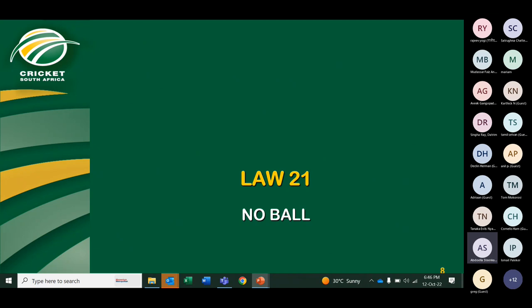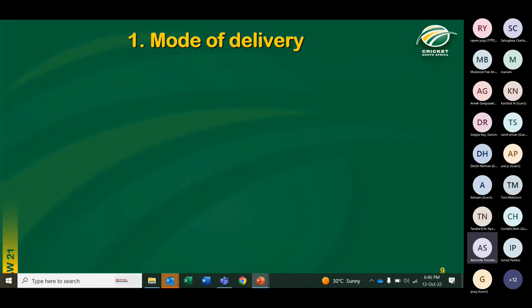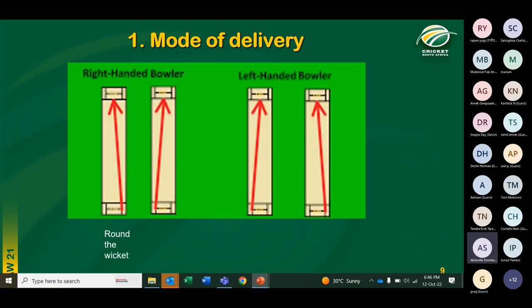The next law is the no ball law. Firstly, mode of delivery. Looking at the picture: if the right-handed bowler is bowling from the right-hand side of the stumps, that is around the wicket. My way of remembering: if the bowling hand is further from the stumps, that is around the wicket; if the bowling hand is closer to the stumps, that is over the wicket.